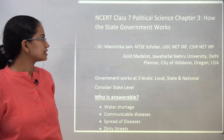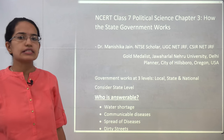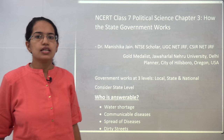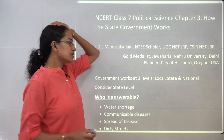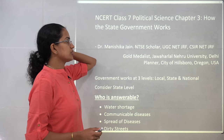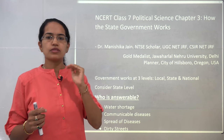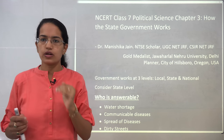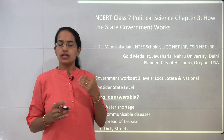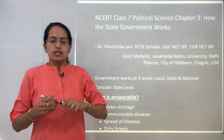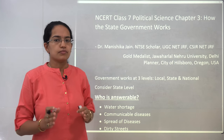Welcome back. We will start with the NCRT Class 7 Political Science Chapter 3, which talks about how the state government works. In the last class — Class 6 — we talked about the machinery for local government. Now we will be discussing the state government.